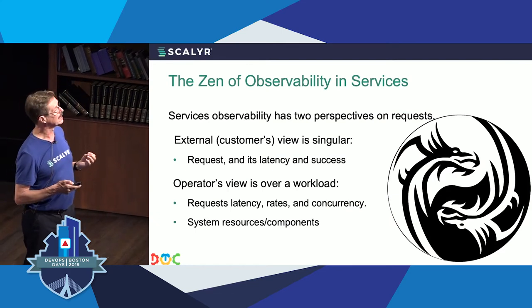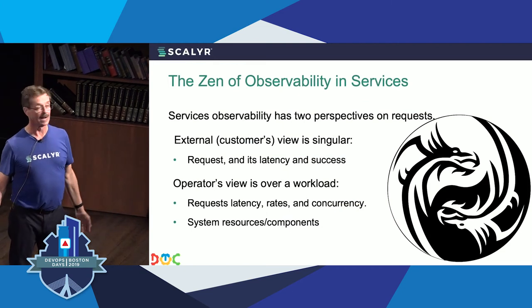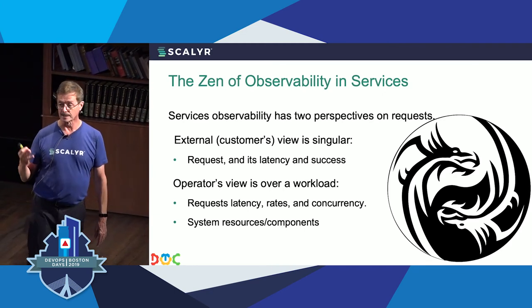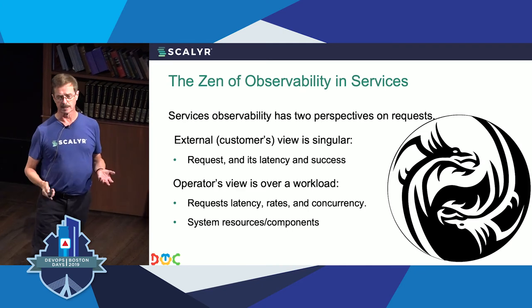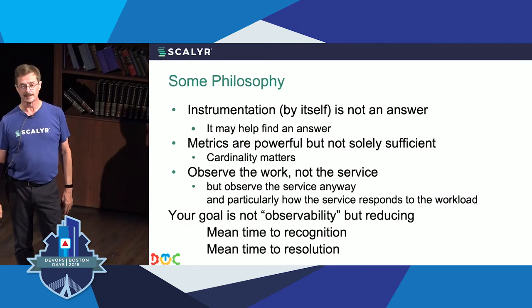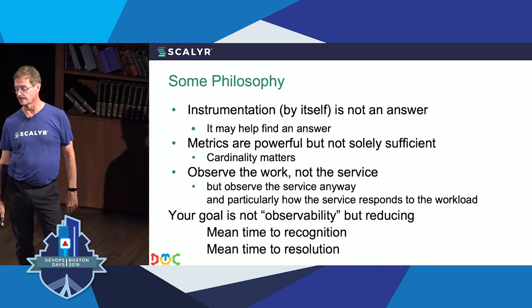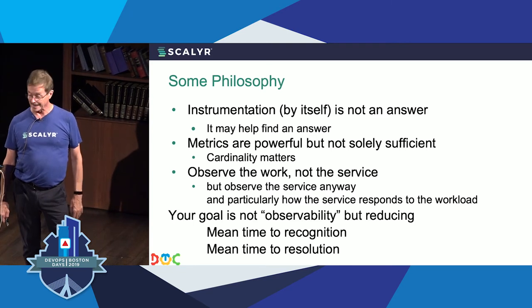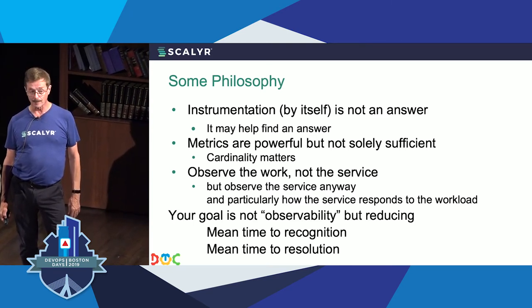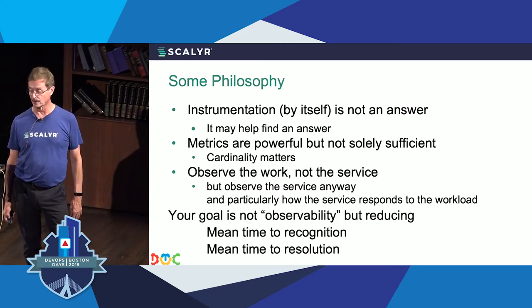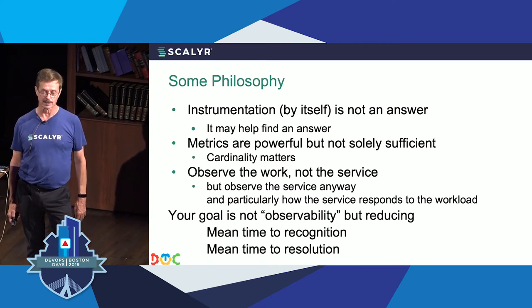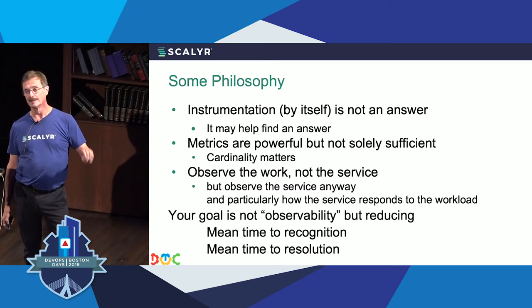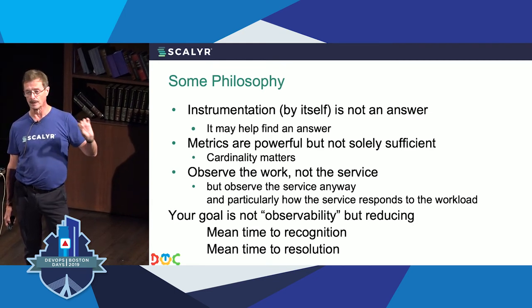There is an observability zen: from the customer, is it working or not? Is it fast or not? That's pretty much it. For the people keeping it working, there's more — latency, rates, concurrency, and how system components respond. Instrumentization by itself is not an answer; it can help you find one, but it's not the answer. Metrics are powerful but not solely sufficient — metrics can be aggregated but not disaggregated. Your job is to look at the work, and in particular how the work affects the service. Your goal is not observability — that's an attribute. Your goal is mean time to recognition and mean time to resolution. RED will help you get there.